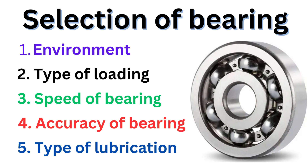Knowing the environmental conditions, types of loading, speed requirements, accuracy of the bearing, and the type of lubrication — these are the main criteria for the selection of a bearing. If you know all these criteria, you can go and select the right bearing. This is all about the criteria for bearing selection.